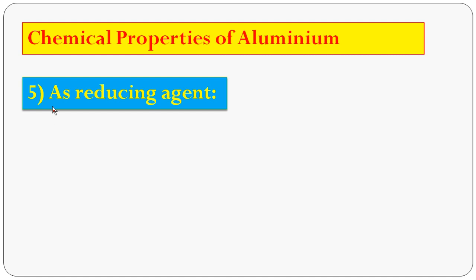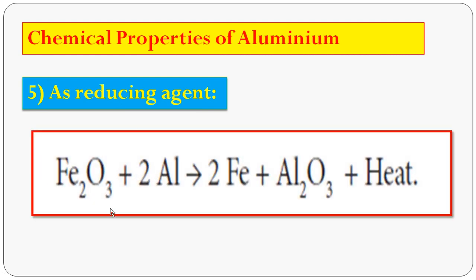The last chemical property: aluminum acts as a powerful reducing agent. When iron oxide (Fe₂O₃) reacts with aluminum, it forms iron and Al₂O₃, producing a large amount of heat. This reaction is called the aluminothermic process: Fe₂O₃ + 2Al → 2Fe + Al₂O₃. These are the five chemical properties of aluminum.